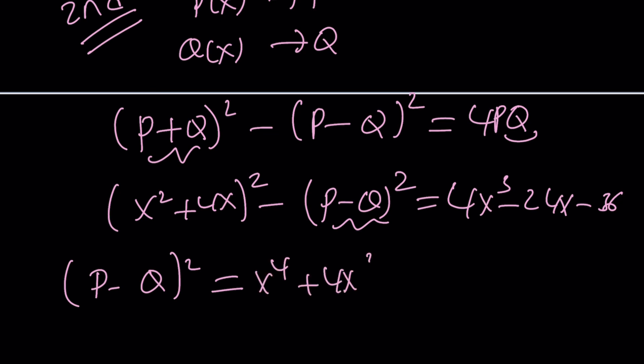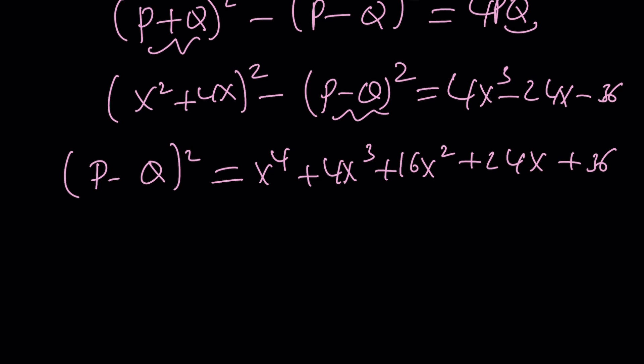And let me tell you what that's going to become. It's going to be x⁴ + 8x³ + 16x² + 24x + 36. You're going to recognize this when you see it. When you square root it, you're going to get the exact same thing. P - Q is going to be x² + 2x + 6.